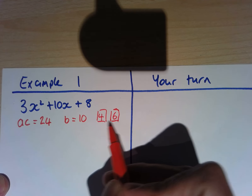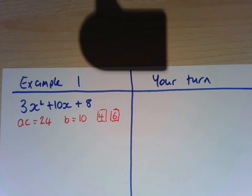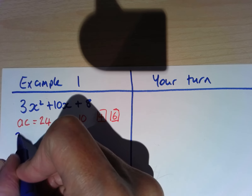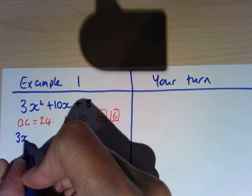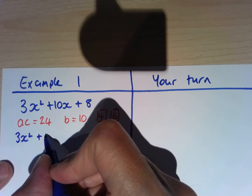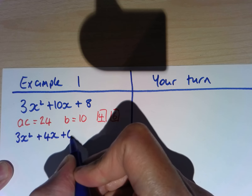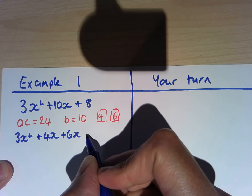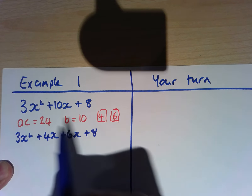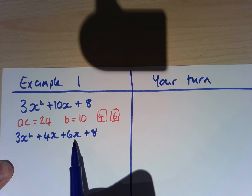That tells me how I'm going to partition this 10x. So I'm now going to write this down: 3x squared, and we're going to split it into plus 4x and plus 6x, and then plus 8. So this 10x has now become plus 4x and plus 6x.